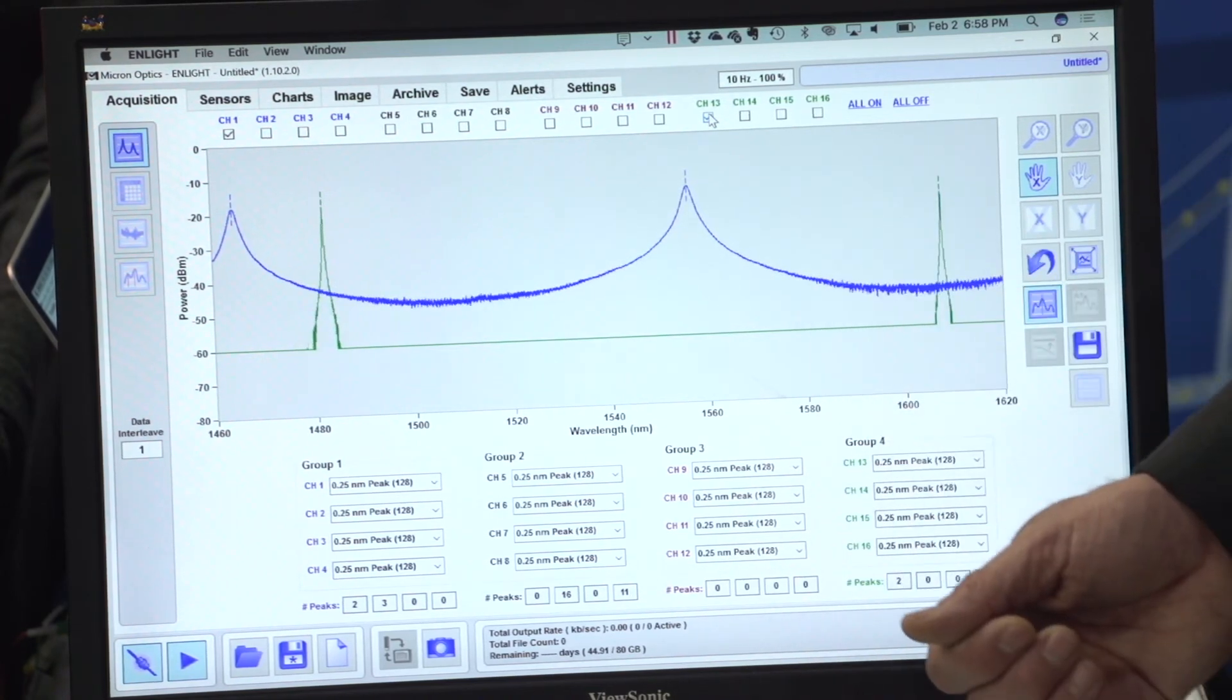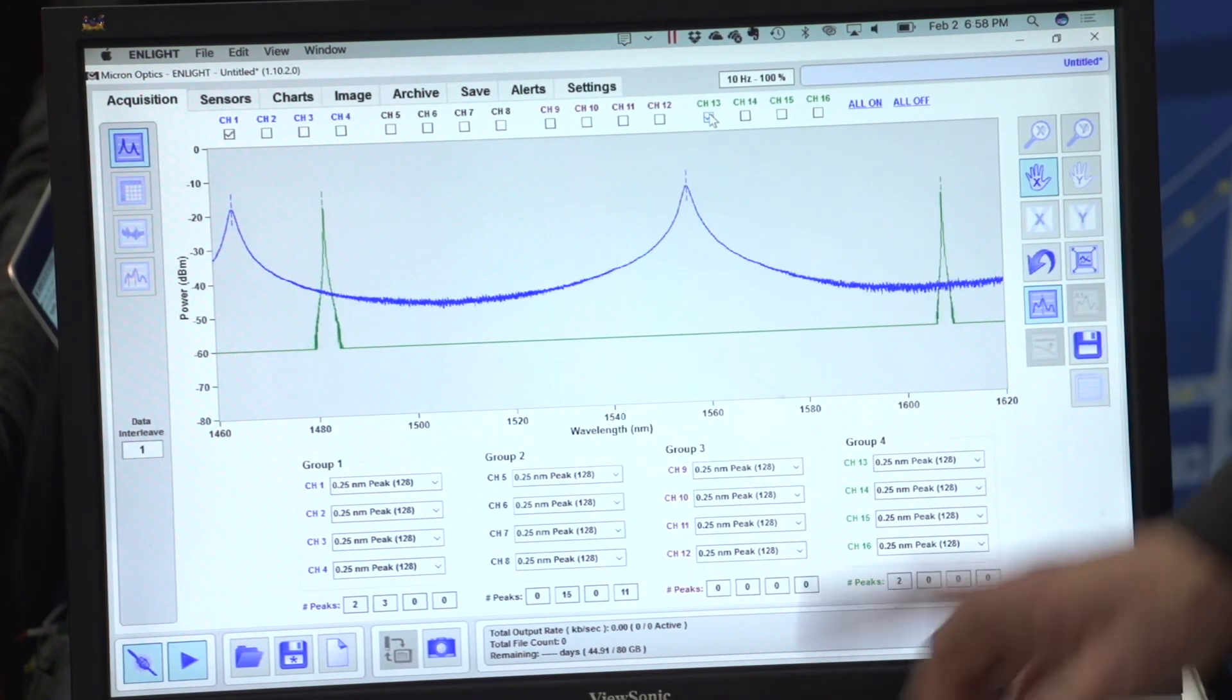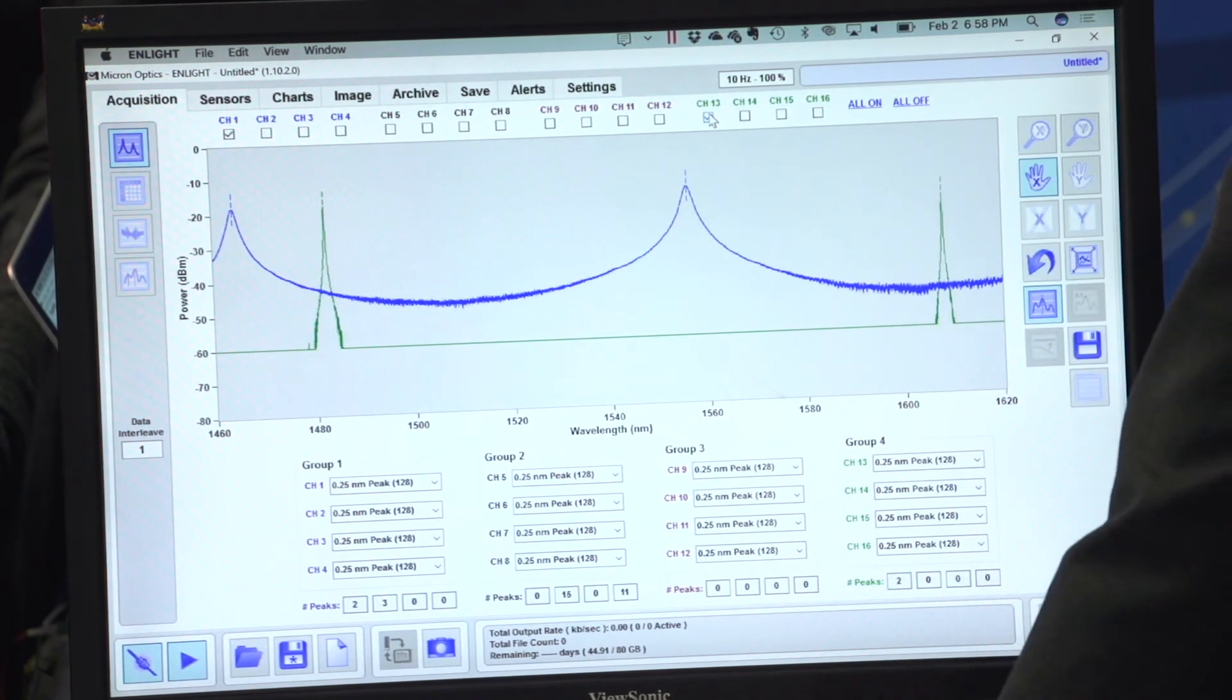In the green we have a higher finesse filter, 160 nanometers and a finesse of 1000. The higher finesse results in a narrower passband and a higher contrast ratio, as is seen on the green filter.